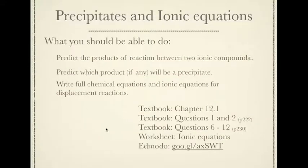Here's a summary of what we should be able to do. We should be able to predict the products of a reaction between two ionic compounds or ionic solutions. We should be able to, given two solutions, mix them together, we should be able to work out what our products are going to be. We should be able to predict if a product will be a precipitate, depending on the solubility rules.